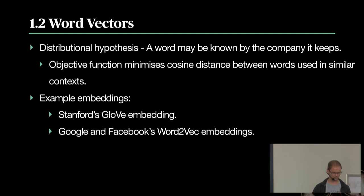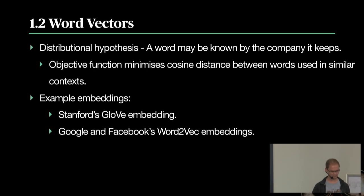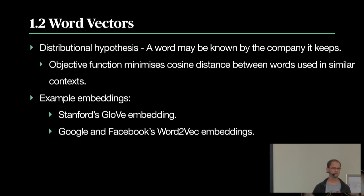The embeddings we use are typically Stanford's GloVe embedding and Facebook's FastText embedding. The FastText one actually started at Google but the researcher moved to Facebook and continued publishing on it. On the FastText Wikipedia page they have pre-trained word vectors in 97 languages, including quite a few of our local languages, which helps to cold-start an NLP system.